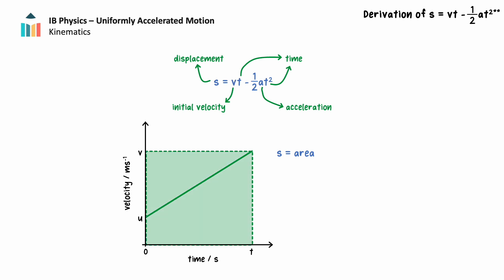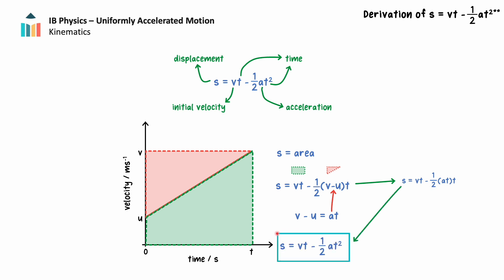We can use a similar approach to derive a formula that is not in our data booklet, but is useful when the final velocity rather than the initial velocity of an object is known. We can imagine the displacement if the object's velocity was equal to its final velocity for the duration of its movement — a rectangle bounded by the final velocity and time. In reality, the area under the graph is smaller than that rectangle by the area of a triangle equal to one-half the change in velocity multiplied by time. Substitution and algebraic rearrangement yield the formula: s equals vt minus one-half at squared. This formula is useful to keep in mind for objects with a known final velocity.